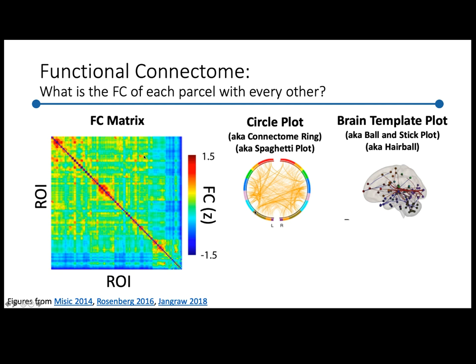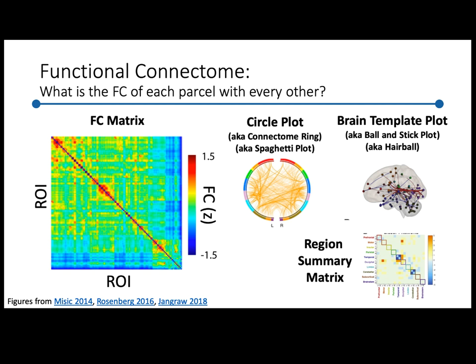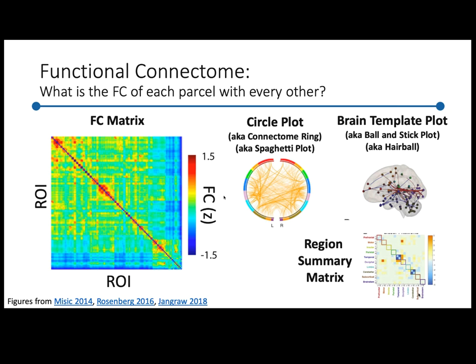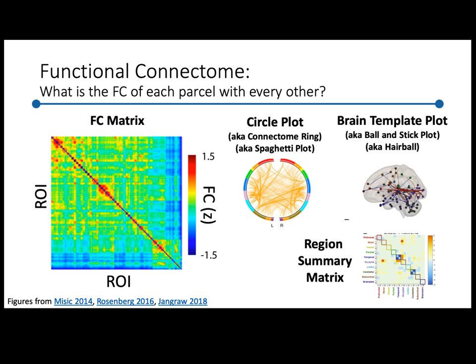Another way to look at this is with a brain template plot, where all ROIs are plotted in their position in the brain, making it easier to see spatial organization, but more difficult to see everything at once since some connections block others. People try to get around that by plotting the same brain in multiple orientations. If this is too much information, you can summarize by looking at a region summary matrix — averaging connectivity within certain pairs of macro-scale regions, like all occipital or all temporal ROIs.